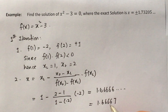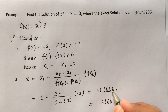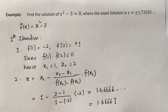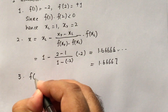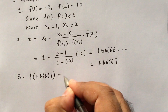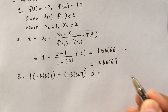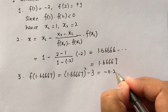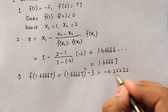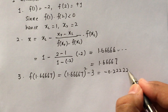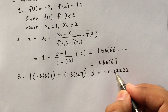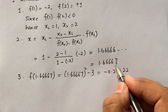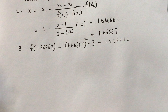Step 3: check whether this approximation is good by substituting into f(x). f(1.66667) = (1.66667)² − 3 = −0.22222. This value is not very close to zero, so we can say that 1.66667 is not a good enough approximation. We therefore proceed to a second iteration.